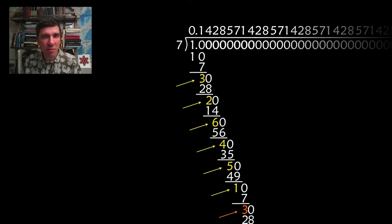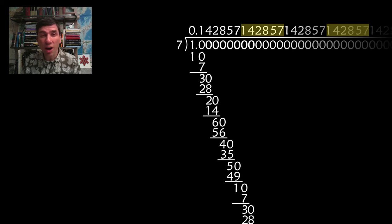So how does this pattern of remainders end up affecting our decimal? Well, it means that the decimal has to repeat. There's no other alternative. It has to repeat. And that's true of any integer divided by any other integer. You are always going to get a repetition.